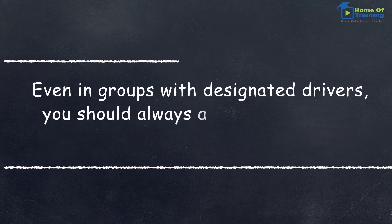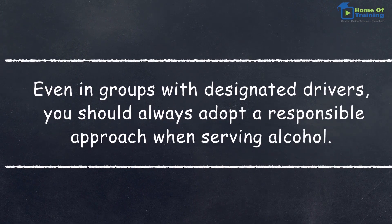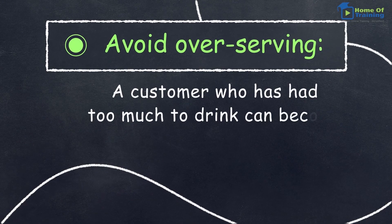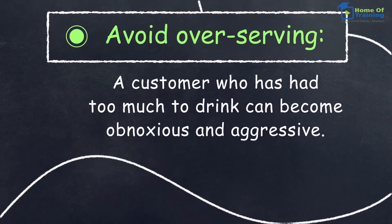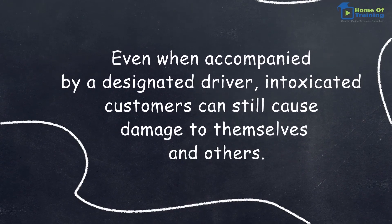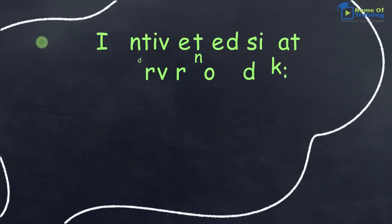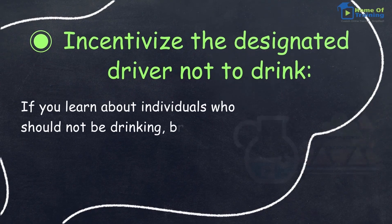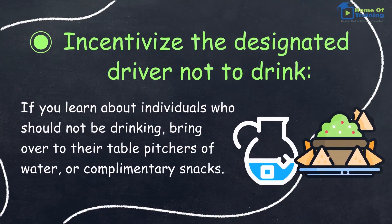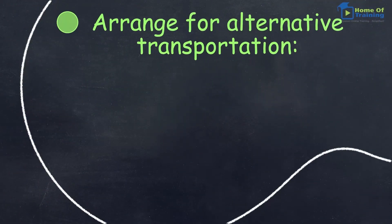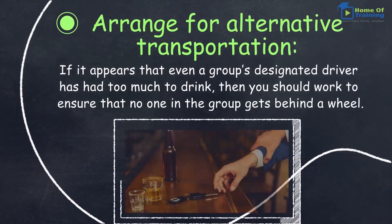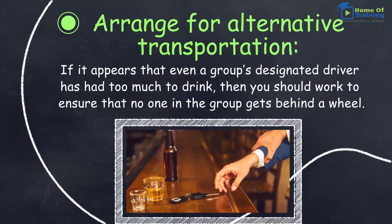Even in groups with designated drivers, you should always adopt a responsible approach when serving alcohol. Avoid over-serving — a customer who has had too much to drink can become obnoxious and aggressive. Thus, even when accompanied by a designated driver, intoxicated customers can still cause damage to themselves and others. Incentivize the designated driver not to drink — if you learn about individuals who should not be drinking, bring over to their table pitchers of water or complimentary snacks. If it appears that even a group's designated driver has had too much to drink, then you should work to ensure that no one in the group gets behind a wheel.